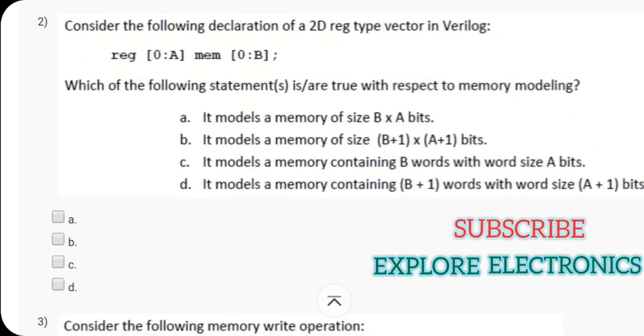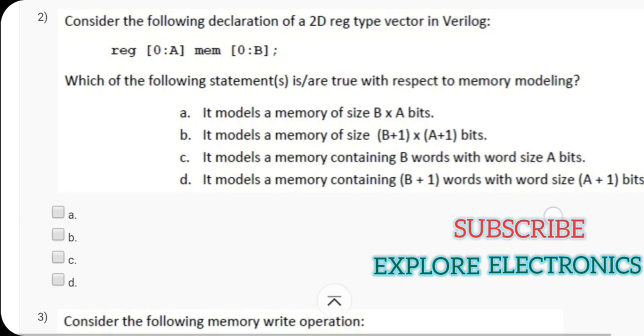The second question is considering the following declaration of two dimensional register type vector, that is REG 0 to A, memory that is MEM 0 to B. This is how they have declared. Here also we need to find out which is the true statement with respect to the memory modeling.